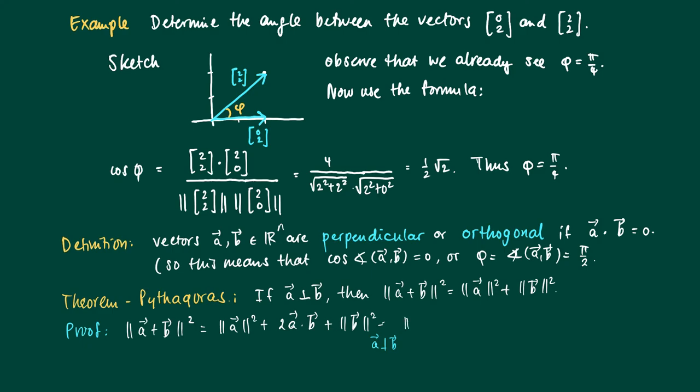And I use the fact that A is orthogonal to B, or the inner product is zero. Then of course this term here is gone and we are left with the length of A squared plus the length of B squared, which is what we're looking at.